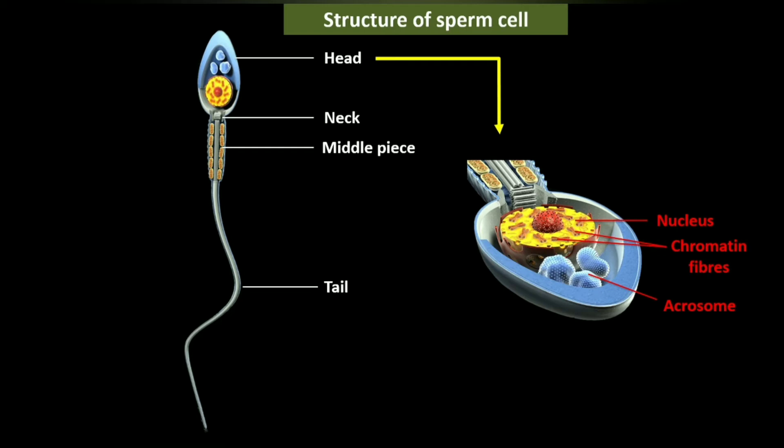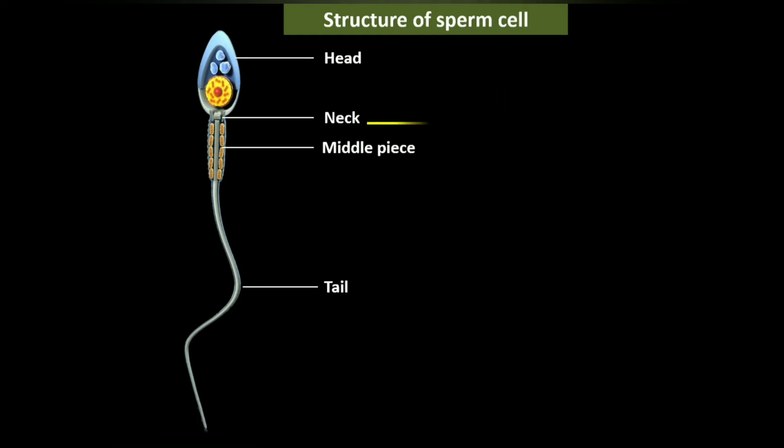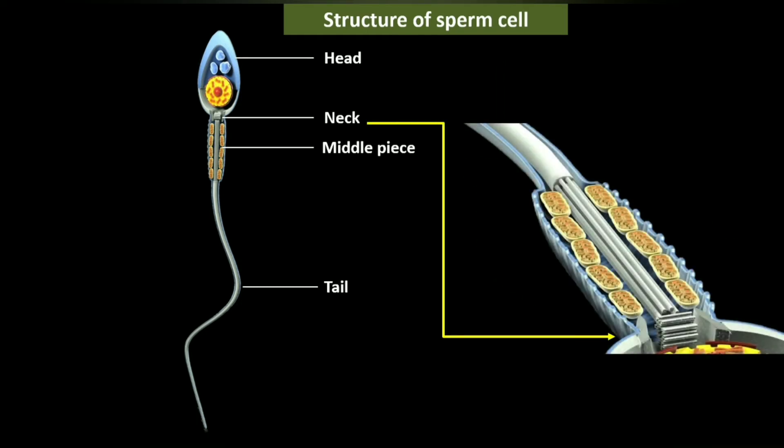The acrosomal region contains the enzymes hyaluronidase and protease, which dissolve the outer coats of the ovum. The acrosome is formed from the Golgi apparatus, and overall the head helps in penetration of the egg.